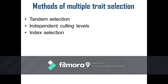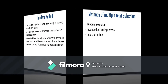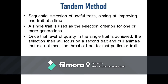In doing multiple trait selection, there are three methods that can be followed. The tandem method refers to the sequential selection of useful traits, aiming at improving one trait at a time. A single trait is used as the selection criterion for one or more generations. Then once the desired level of quality in the single trait is achieved, selection will focus on a second trait and cull animals that did not meet the threshold set for that particular trait.